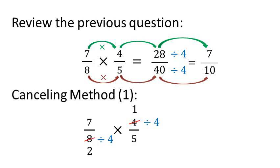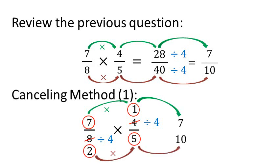Now multiply the numerators, 7 and 1, to get 7, and the denominators, 2 and 5, to get 10. So the answer is 7 over 10.